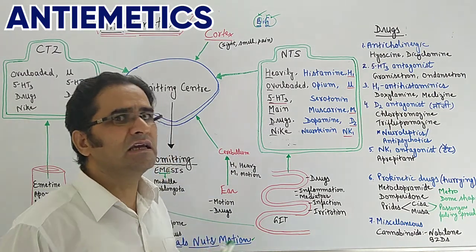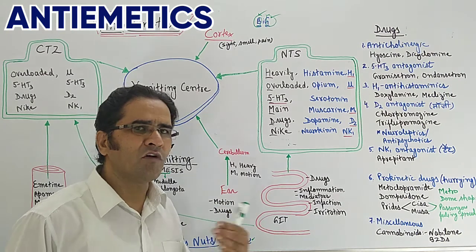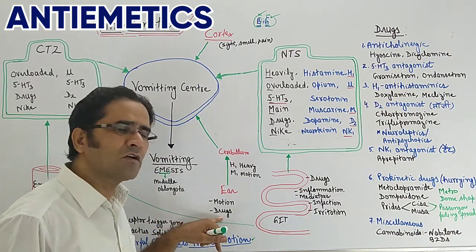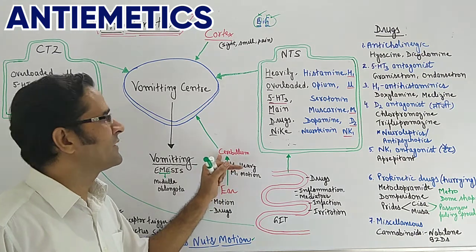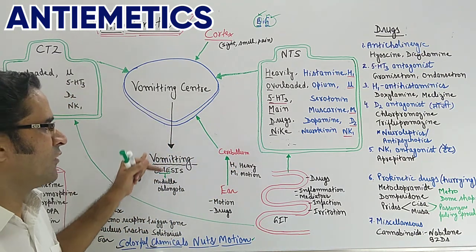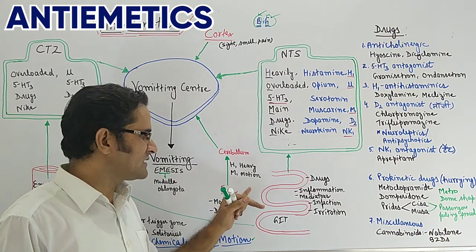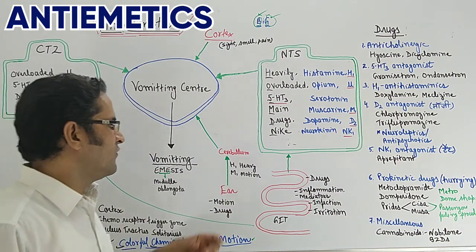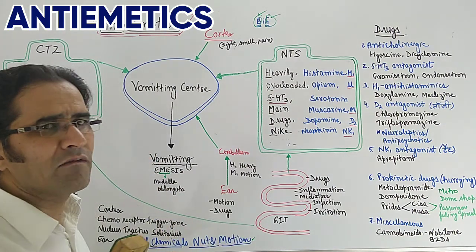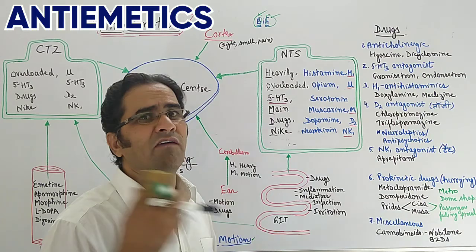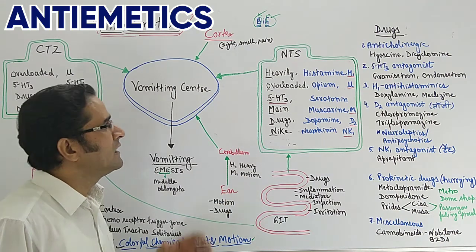The missing M and H receptors are connected to the ear pathway. Whenever a person is in fast motion, vomiting can develop. Through the ear, information is sent to the cerebellum, which ultimately reaches the vomiting center, and vomiting occurs. The receptors involved here are M1 and H1. To remember: whenever there is heavy motion — related to the ear — if you revolve with heavy motion, you will definitely feel vomiting. So H1 and M1 receptors are involved in motion-related emesis.